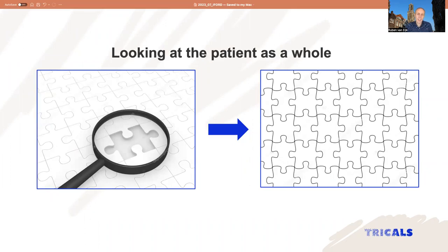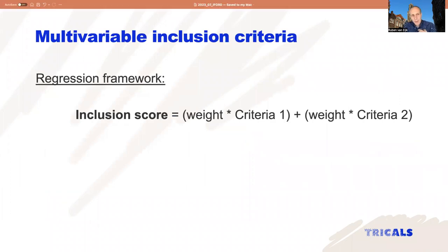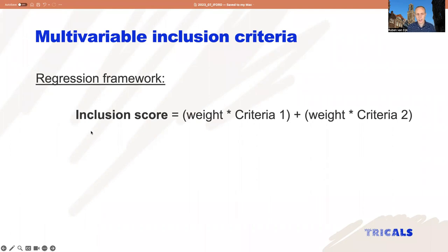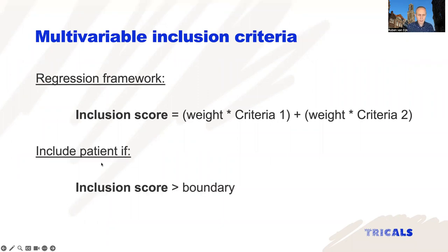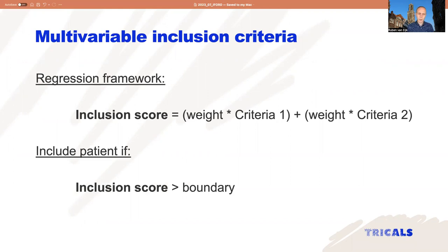So I will start to talk about the prediction model we used in this trial. The way we can do this is by using a regression framework — a simple linear regression. We have criteria one (for example, age) and criteria two (for example, vital capacity), and we give each criterion a certain weight. We take the sum of those criteria and get an inclusion score. A patient with a good score on criteria one but a poorer score on criteria two can still have a good inclusion score. We then decide that if a patient meets a certain inclusion score, they can participate in the study.